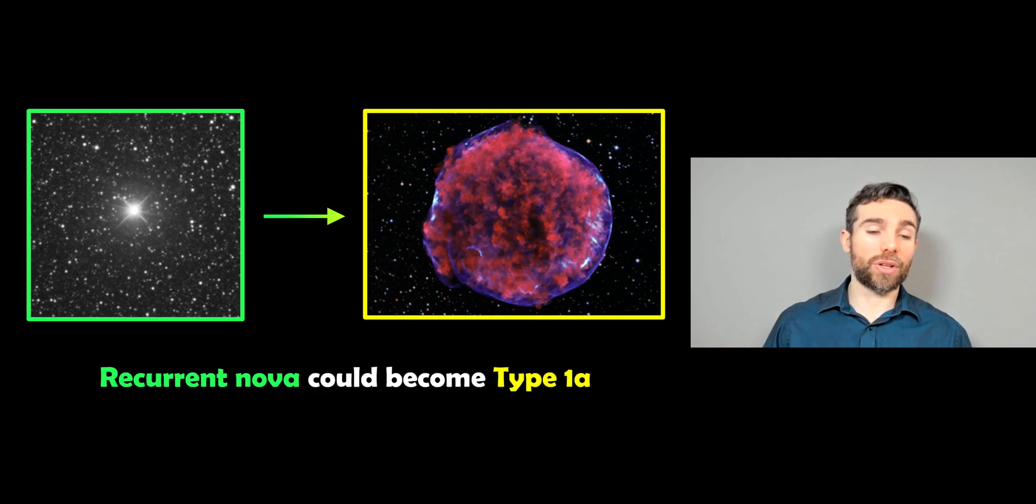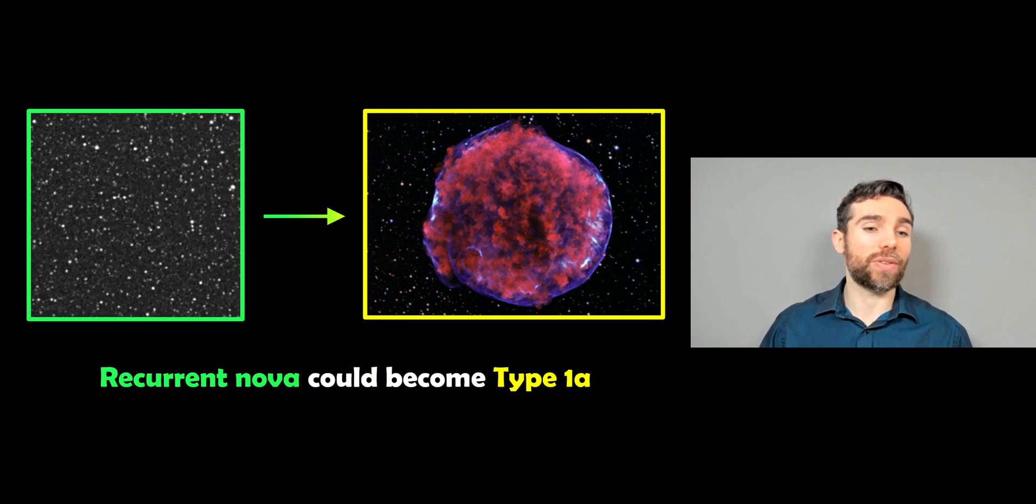So if you've got those occurring, you've got a nova, and it might be reoccurring. So this happens multiple times, not just once.